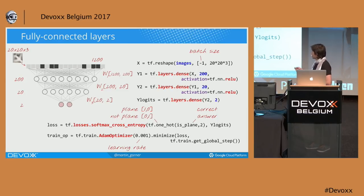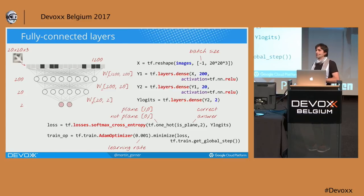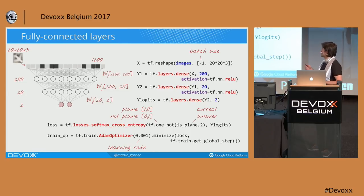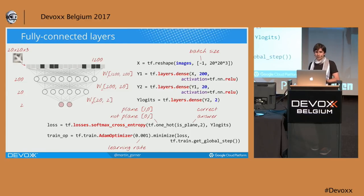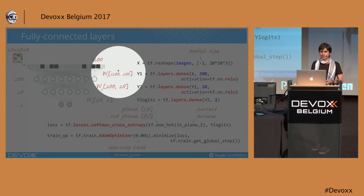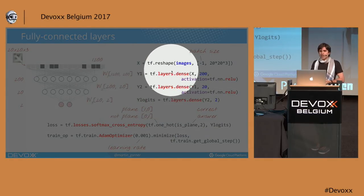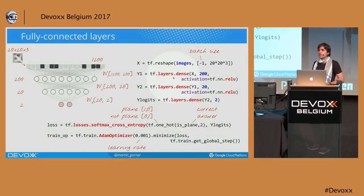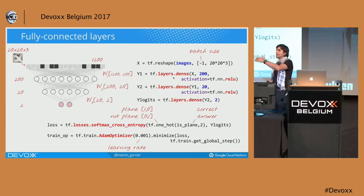As a computer engineer, I want you to have in mind how many weights you are creating when calling these high-level functions. For a dense layer — a layer where everything is connected to everything — the number of weights is the number of inputs multiplied by the number of outputs. Then we have those weighted sums — compute it. Now I said we need an activation function.